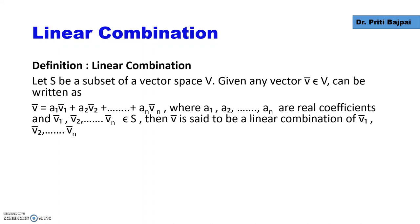Let's take some real coefficients a₁, a₂, aₙ etc. and write a combination a₁v₁ + a₂v₂ + ... + aₙvₙ. Now this is nothing but a linear combination and here we have written the vector from a vector space small v as a combination.